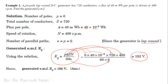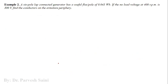By putting all these parameters and calculating, the generated EMF obtained is 192 volts. This DC generator with all these parameters will generate 192 volts. It is a very simple and easy numerical.